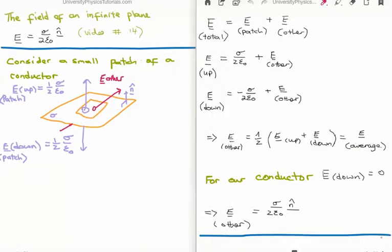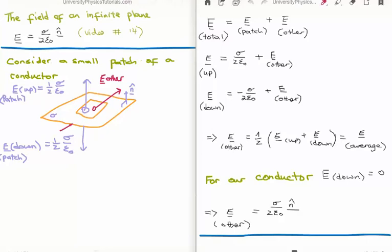Going back to video number 14 where I discussed the electric field of an infinite plane, we found that the electric field was equal to sigma over twice epsilon zero n hat. Let's consider a small patch of a conductor — the larger orange rectangle on the left hand side is our conductor. The electric field above our conductor due to the patch is one half sigma over epsilon zero, and the electric field of our conductor due to the patch underneath is also one half sigma over epsilon zero. In purple we have the other electric fields penetrating the patch.